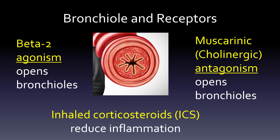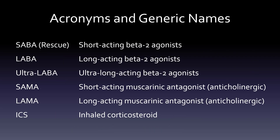In the middle, we have inhaled corticosteroids (ICS), which reduce inflammation. Asthma involves both bronchoconstriction and inflammation. The MADNESS acronym helps organize the drug classes: SABA is short-acting beta-2 agonist, LABA is long-acting beta-2 agonist, and UltraLABA is ultra-long-acting. The rescue inhaler works quickly, the LABA works half the day (used twice daily), and the UltraLABA lasts all day. Then SAMA is short-acting muscarinic antagonist, LAMA is long-acting muscarinic antagonist, and ICS is the inhaled corticosteroid.